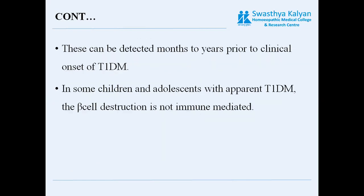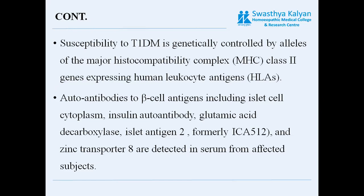These autoantibodies to beta cell antigens — including islet cell cytoplasm, insulin autoantibody, glutamic acid decarboxylase, islet antigen 2, and zinc transporter — can be found months to years prior to the clinical onset of Type 1 diabetes mellitus.